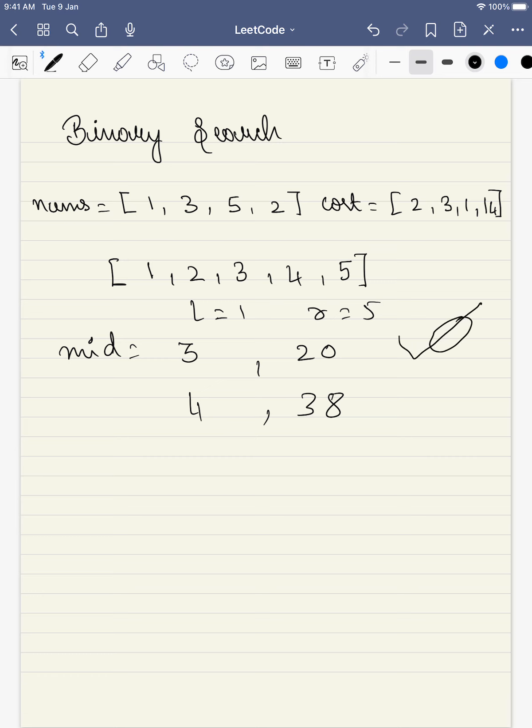So if for 4 it is 38, on which side of the curve is it? It is on this side. So what we can simply do is our answer will be in the range of 1 to 3 and can never be 4 and 5, so we can safely eliminate 4 and 5 from the search space.